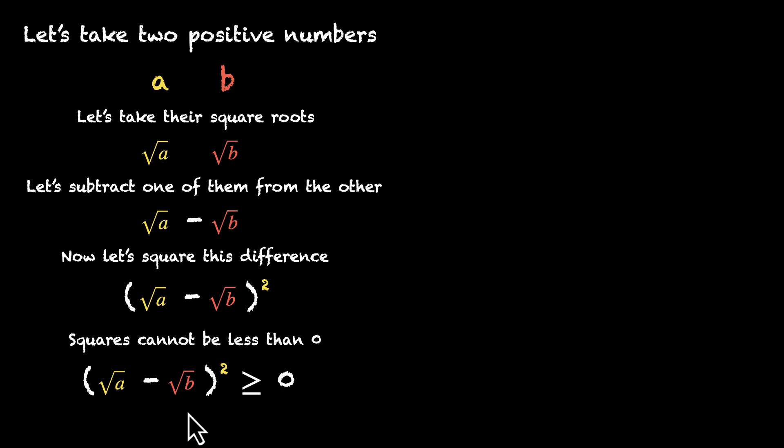In just a few steps, this inequality will give us the result we're looking for. Do you want to pause and try it on your own? Okay, let's do this together. Let's expand the left side. We get this square, which is a, plus this square, which is b, minus 2√a√b, which is 2√ab, because the numbers are positive. That is greater than or equal to zero. We're already seeing √ab. We're getting very close to our GM.